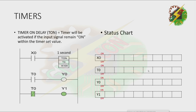Let's have our example. Initially, X0 is off, T0 is off, Y0 is off, and Y1 is on — because Y1 is connected to normally closed T0. On our timer, we have timer 0 and K100. K stands for constant, so we have a value of 100 multiplied by 10 milliseconds, which gives us 1000 milliseconds, or equivalent to 1 second.